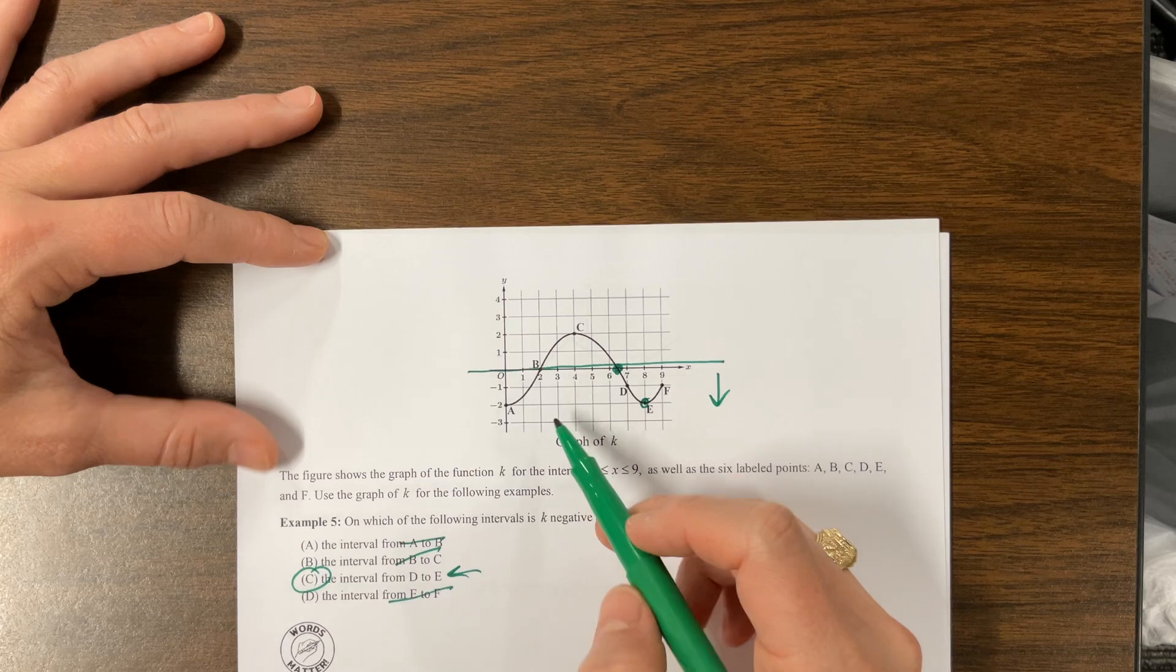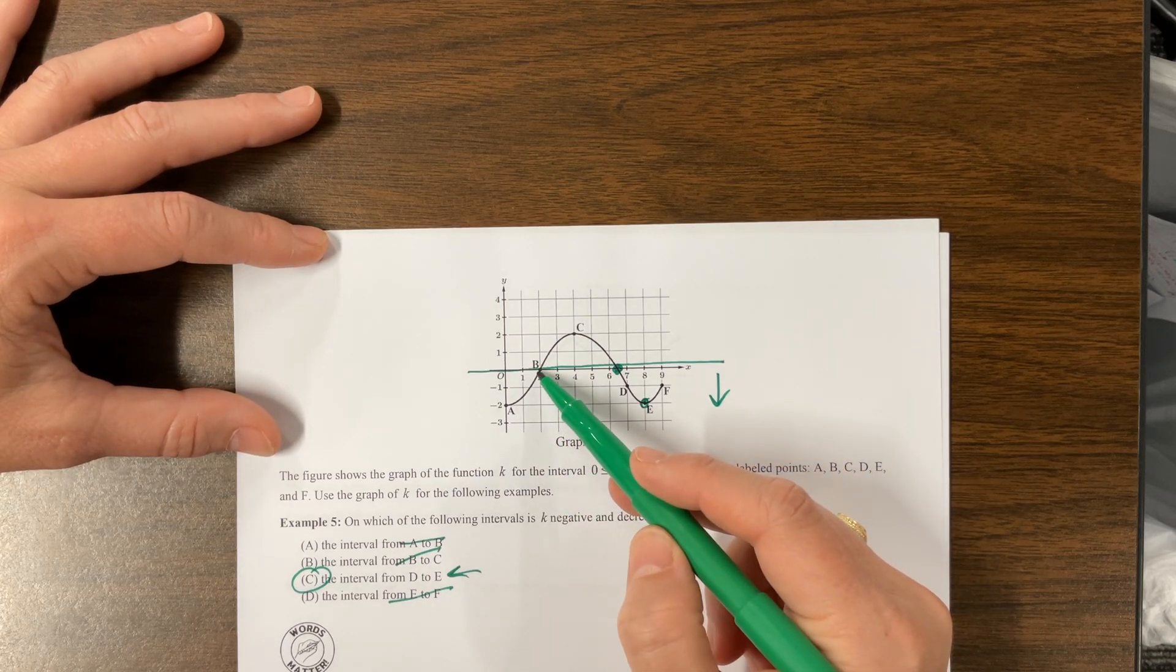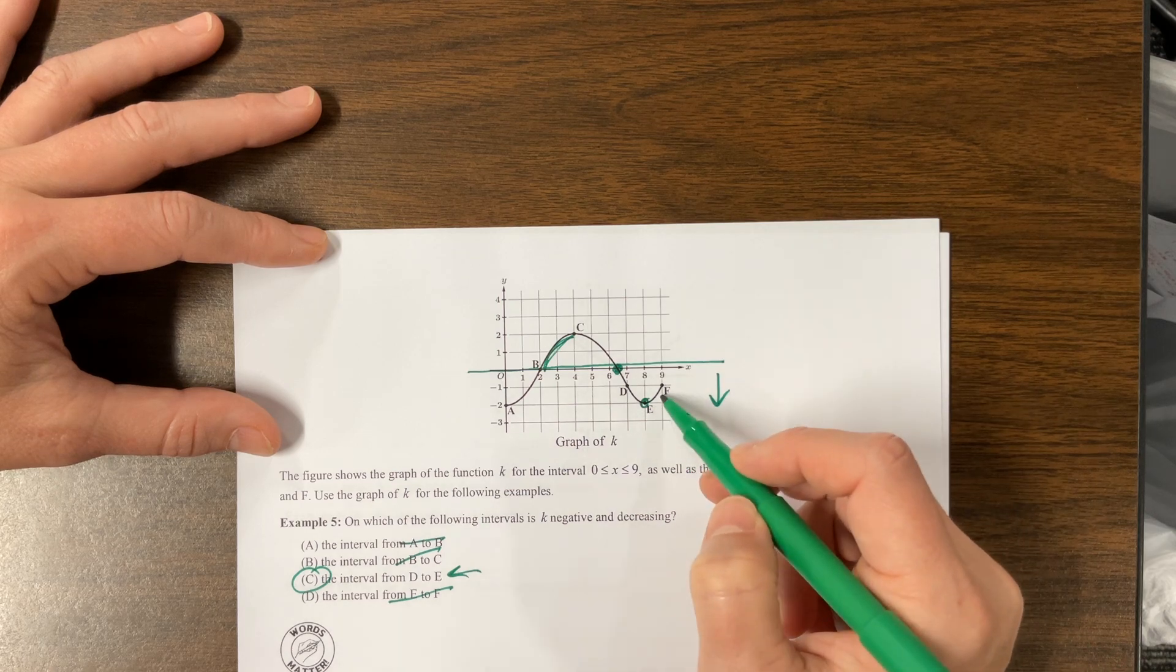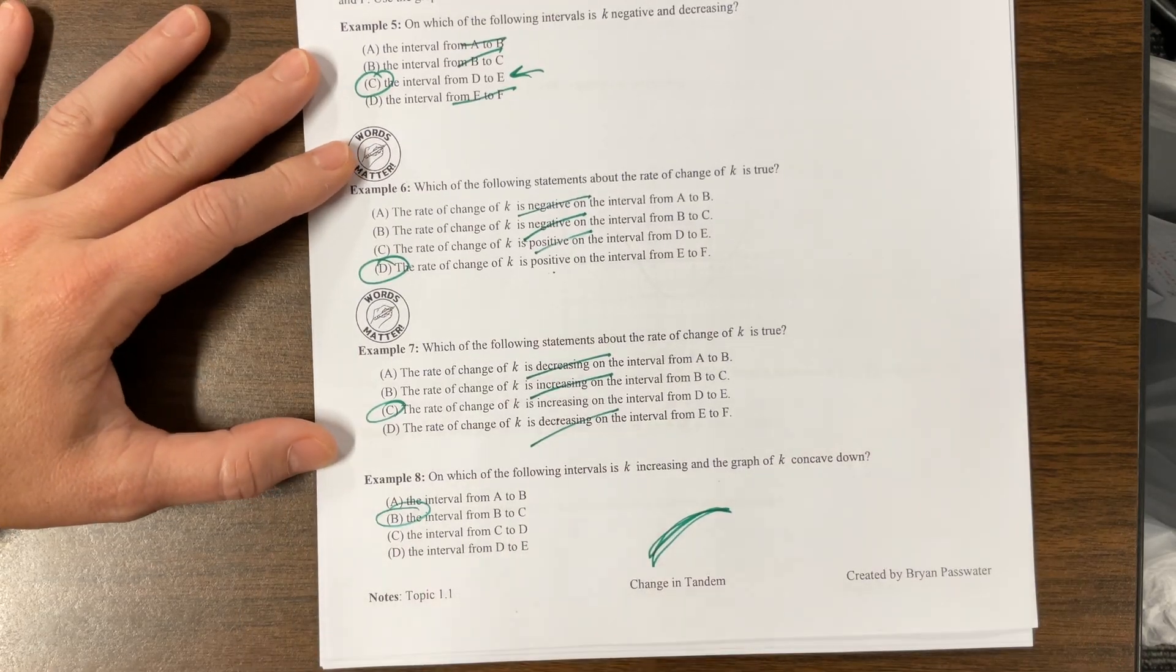So coming back here, where am I? Where do I look something like that? Yep. This is increasing and concave down. B to C would work. We're increasing again here, but that's concave up. So B to C is the only answer. And there we go.